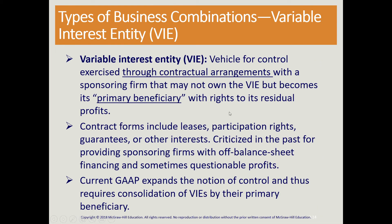Another type of business combination is the variable interest entity or special purpose entity. We introduced this when talking about the equity method. We could have significant influence or control not just by ownership percentages, but also by contractual agreements. So we may have a very small ownership that doesn't meet the threshold, but because we control this company through contracts, we have to consolidate their financial statements. Since there may be different or many owners of this variable interest entity, we have to identify the primary beneficiary, who will be the one consolidating the financial statements. We'll cover this in Chapter 6.